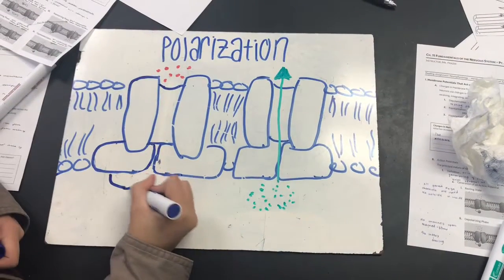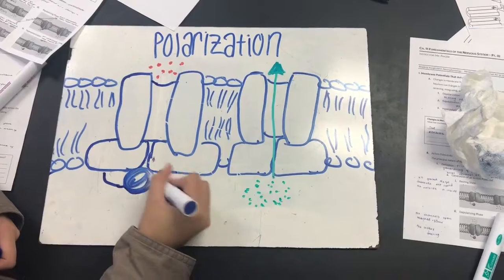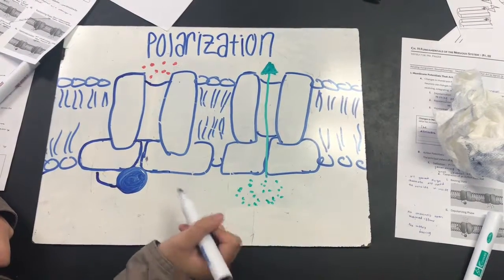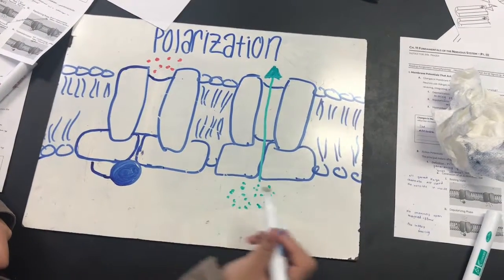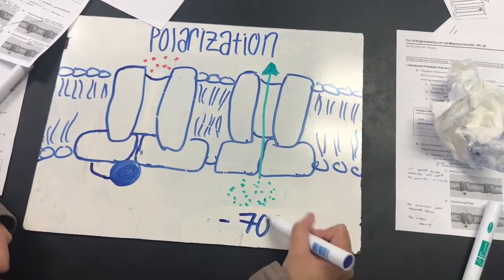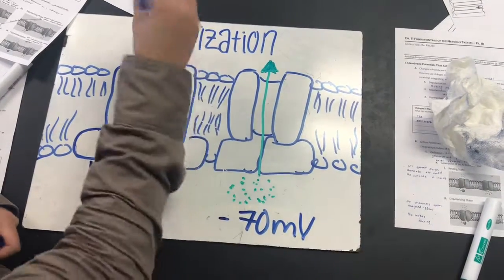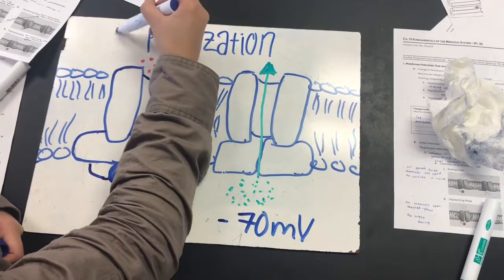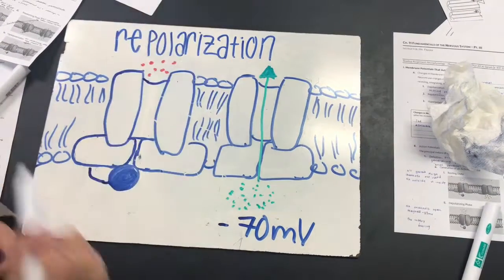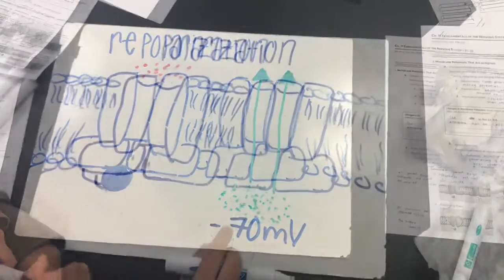Now we are going to repolarization. During repolarization, the sodium channels are closed again and the potassium channels start to open, which allows for a K+ efflux — meaning potassium moves from inside to outside of the cell.